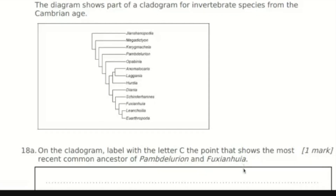To keep it realistic, they've included the actual names, but just call them P and F. Find P, which is up here — trace it back and you see it's branching from this point. Then F is all the way down here, but it feeds back to where it shares a common ancestor with P, which is right here. So this is where you put your arrow and label letter C — the point where these two species share a common ancestor.